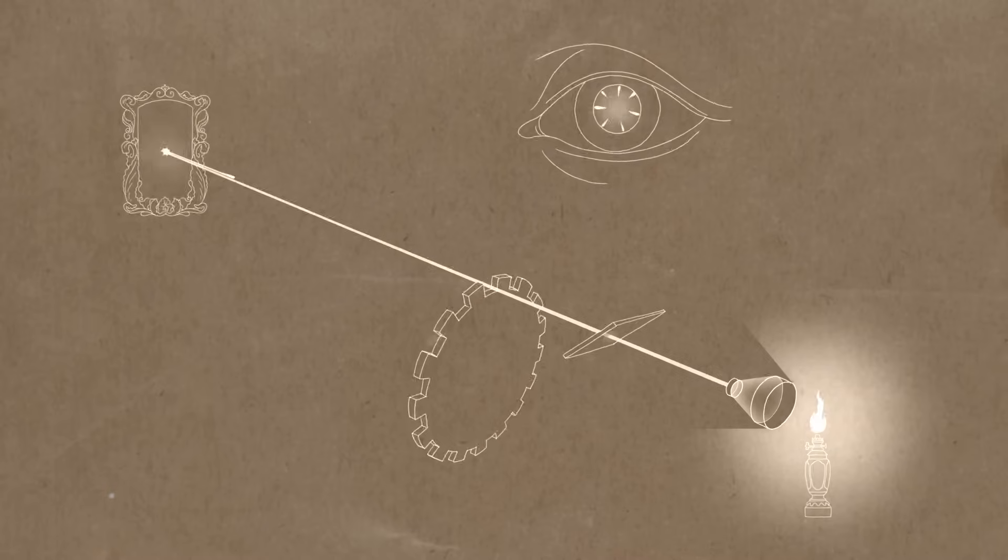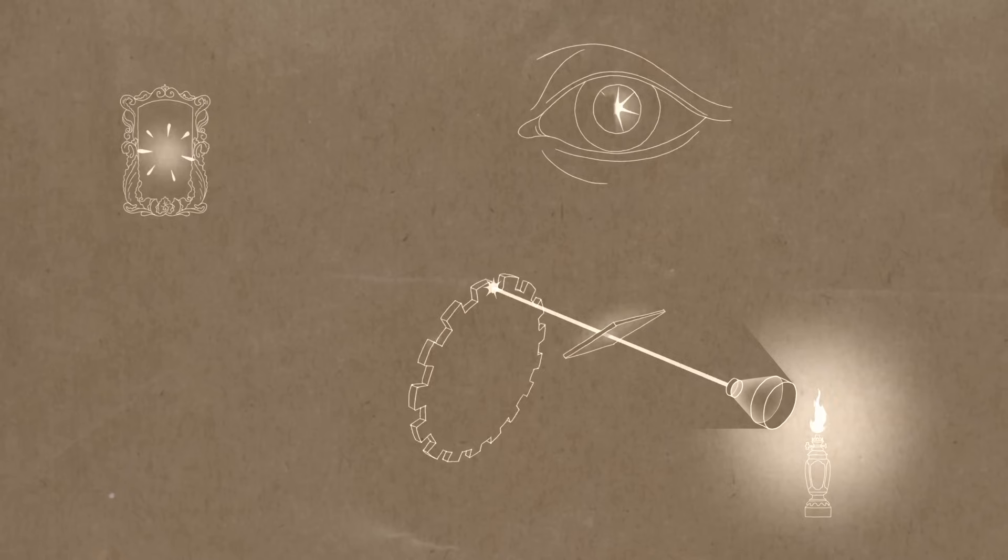But something interesting happens. As he spins the wheel faster, he notices that it seems like a door is starting to close on the light beam that's coming back to his eye. Why is that?